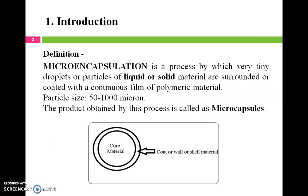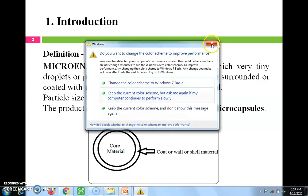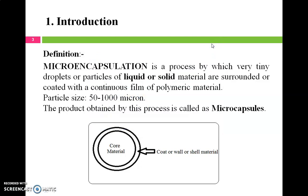First, we'll see what microencapsulation means. Microencapsulation is a process by which very tiny droplets or particles of liquid or solid material are surrounded or coated with a continuous film of polymeric material. The product obtained by this process ranges in size from 50 to 1000 microns and is called microcapsules.